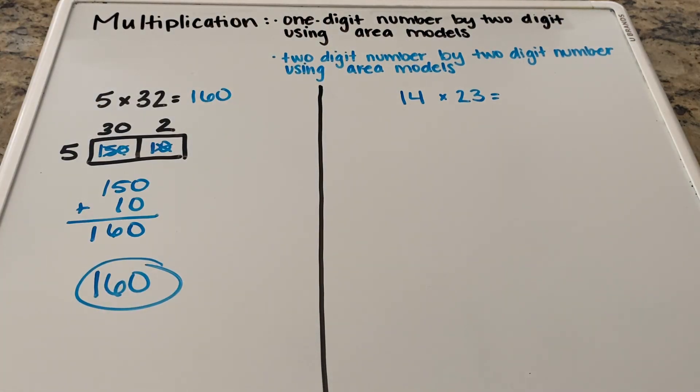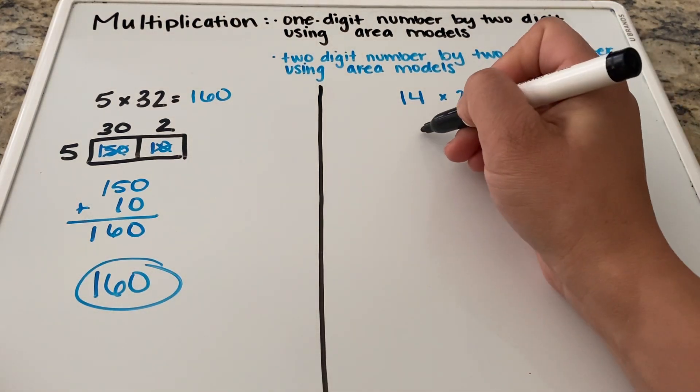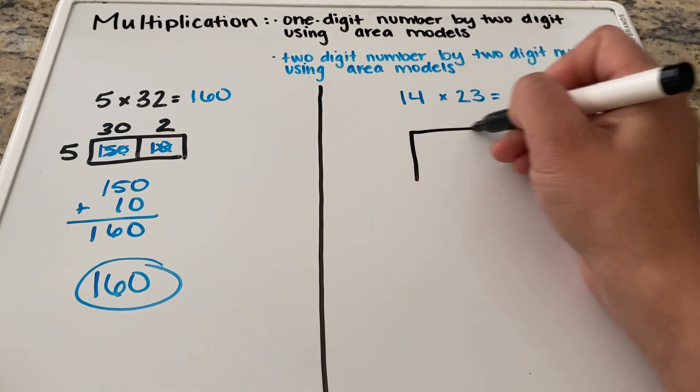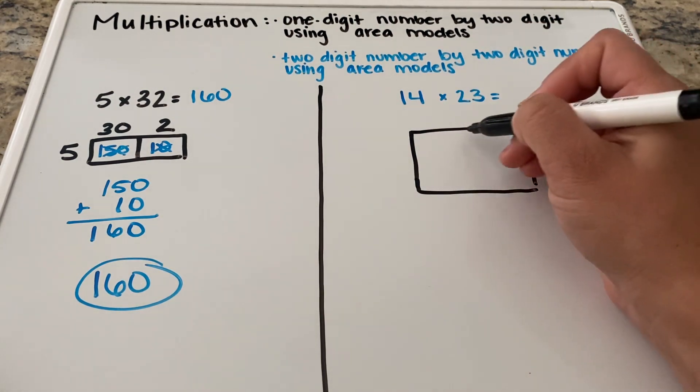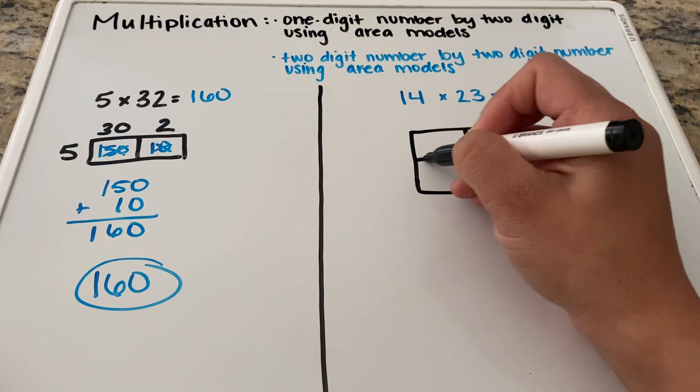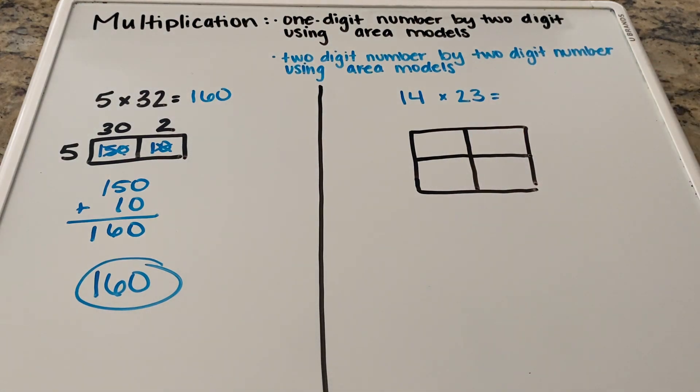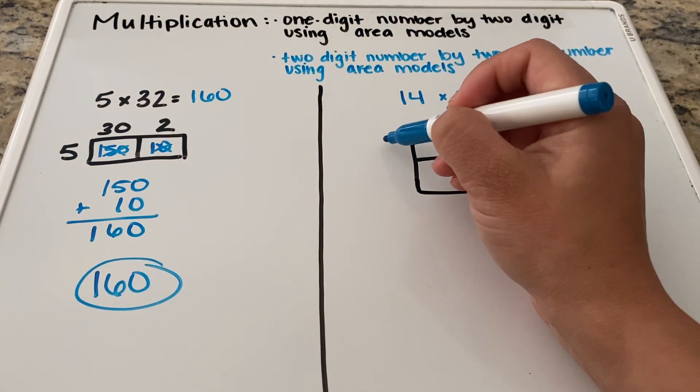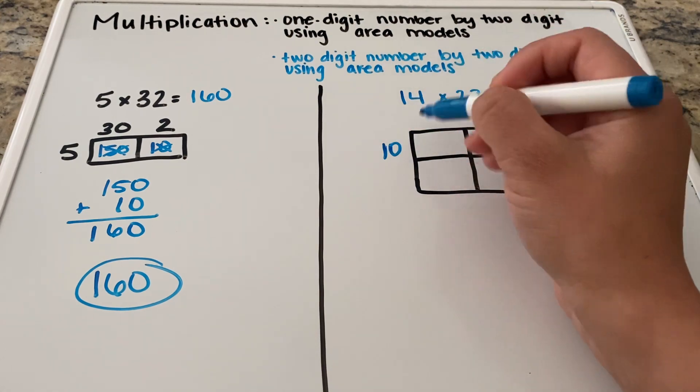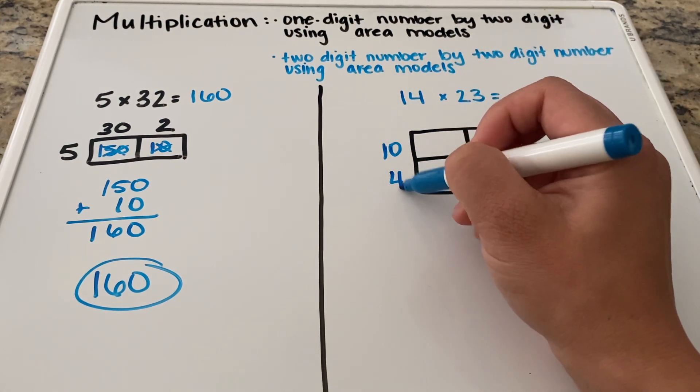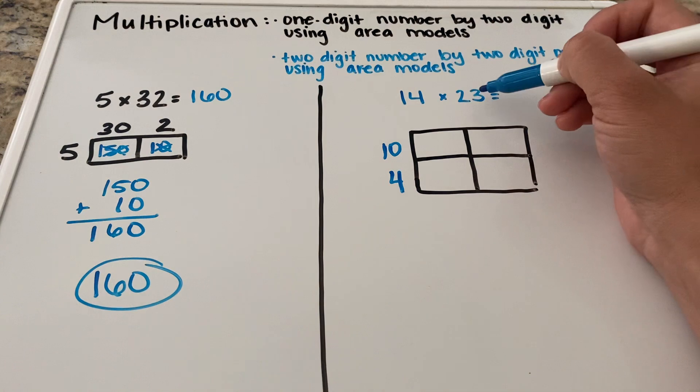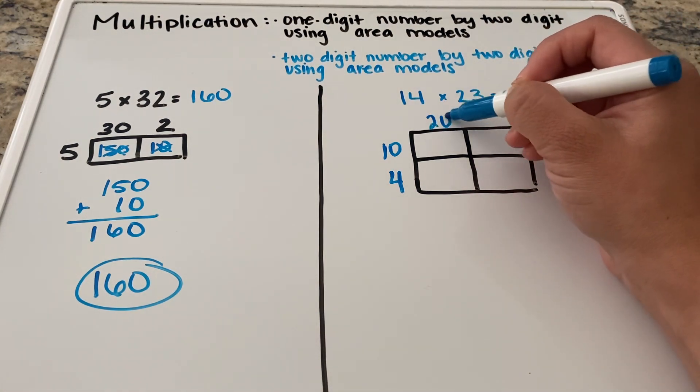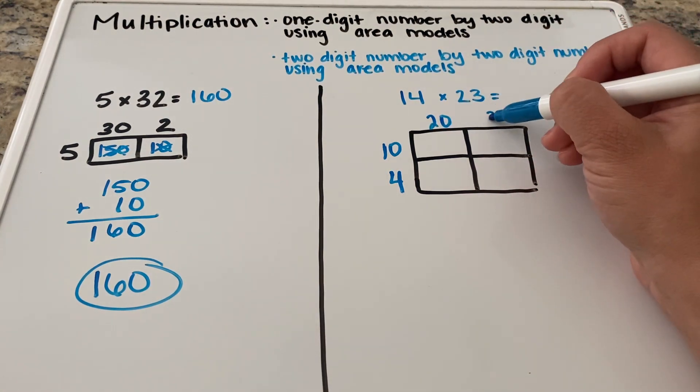On our right hand side we have a two-digit by two-digit model. With this one we're going to be doing the same thing but we need to make a slightly bigger box because we have two two-digit numbers. So this box is going to be a little bit bigger just like so. We're going to take our 14 and put it off to our left hand side. So our one is in our tens place. So we are going to do one with a zero as our filler. Our four is in our ones place. Then our 23, our two is going to be in our tens place and our three is in our ones place.